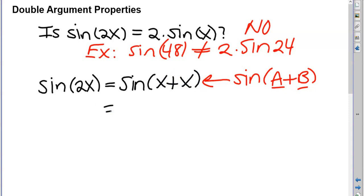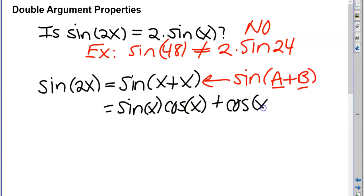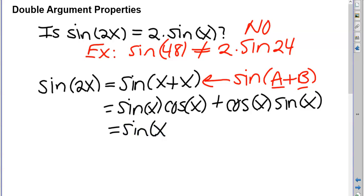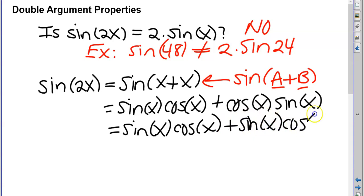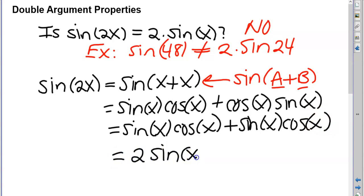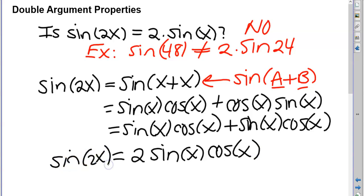Using the sine of a plus b property, I can expand sine of x plus x as sine x cosine x plus cosine x sine x. Since sine x cosine x and cosine x sine x are the same thing, I have two of those, so this becomes 2 sine x cosine x.